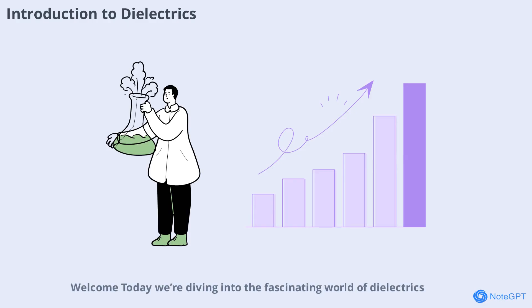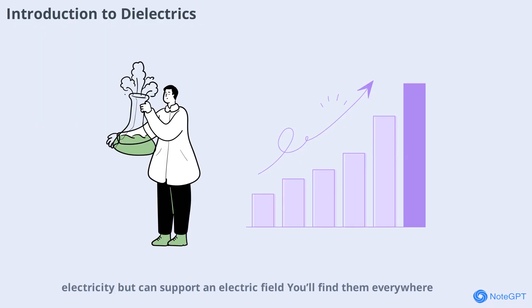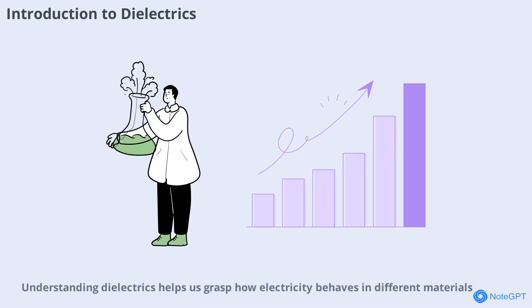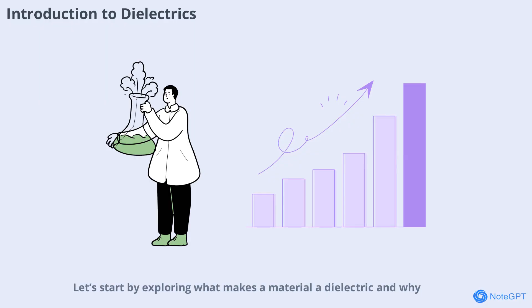Welcome. Today we're diving into the fascinating world of dielectrics, a fundamental concept in physics. Dielectrics are materials that don't conduct electricity but can support an electric field. You'll find them everywhere, from the plastic coating on wires to the insulators in capacitors. Understanding dielectrics helps us grasp how electricity behaves in different materials and why certain substances are chosen for specific roles in electronic devices. Let's start by exploring what makes a material a dielectric and why this property is so important in both everyday life and advanced technology.